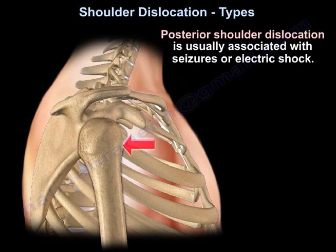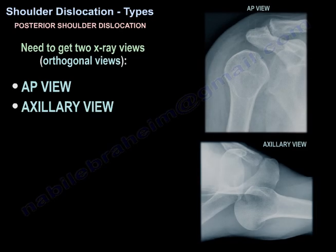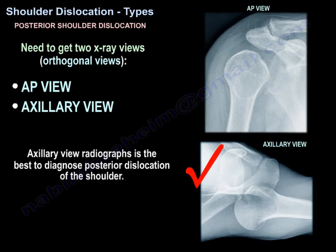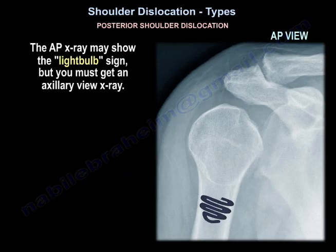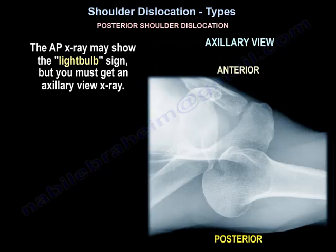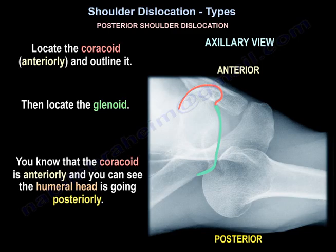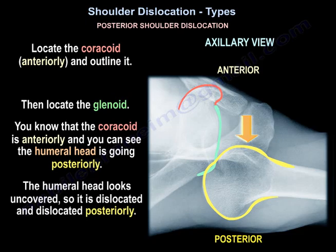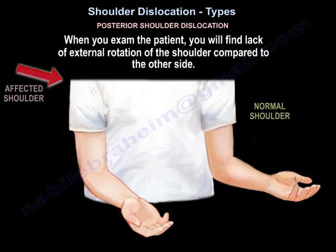Posterior dislocation is usually associated with seizures or electric shock, but you need to get two views of the shoulder to diagnose it — an AP and axillary view. The AP view may show the light bulb sign, but you must get an axillary view. On the axillary view, here is the coracoid and here is the glenoid — the coracoid is anterior, and you can see the head going posteriorly, appearing uncovered, confirming posterior dislocation. On examination, you will find lack of external rotation compared to the other side.